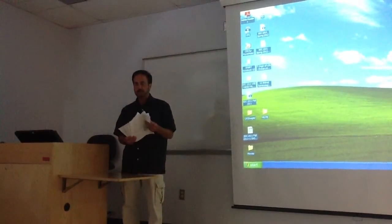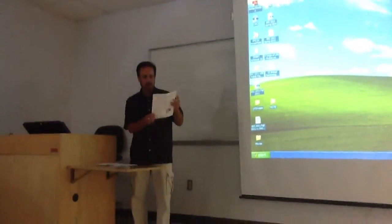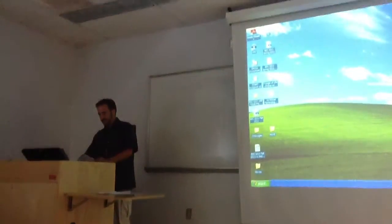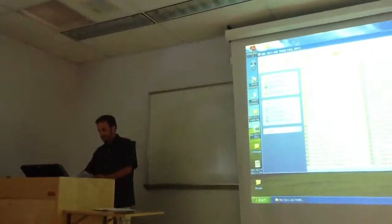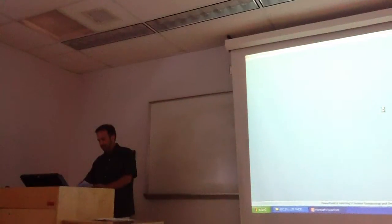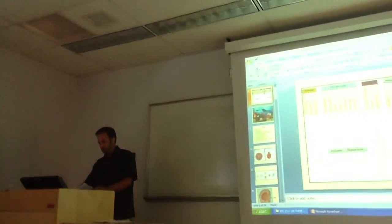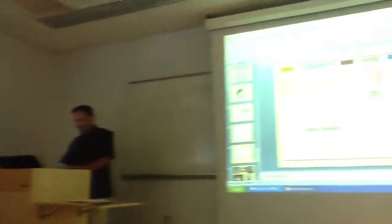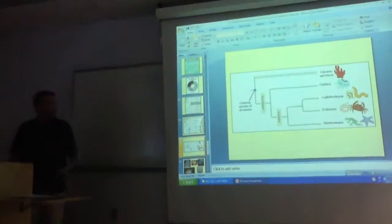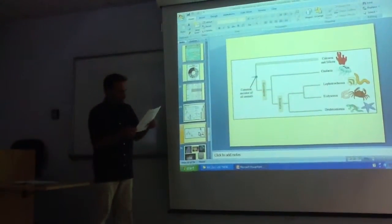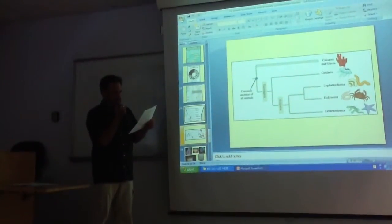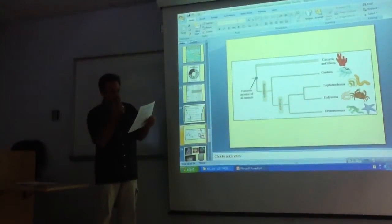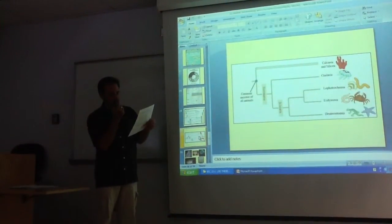Exam three, question two. The question states that radial indeterminate cleavage is likely to be the ancestral cleavage pattern for all bilaterian animals, and that spiral and determinate cleavages represent derived conditions for certain groups. The key part asks you to use the phylogeny presented and your knowledge of the cleavage pattern for each group in order to argue that radial cleavage is likely ancestral and spiral and idiosyncratic cleavage patterns are derived.